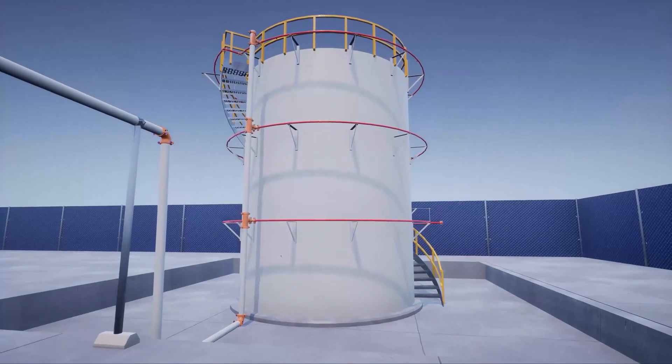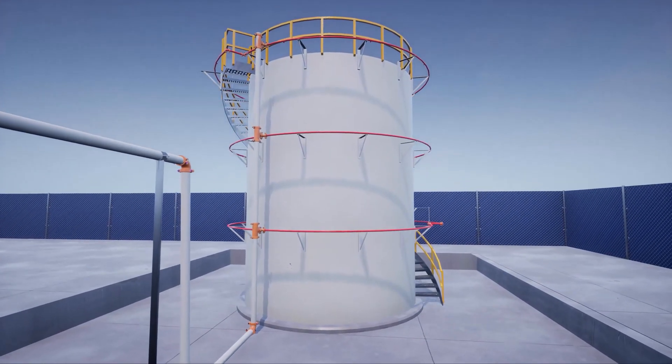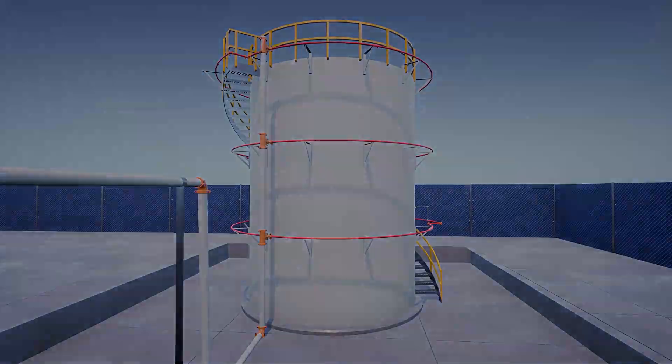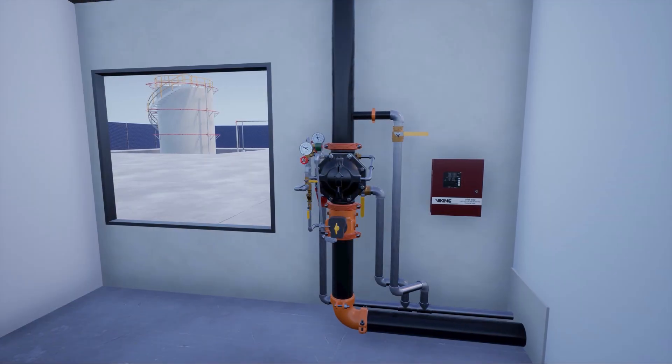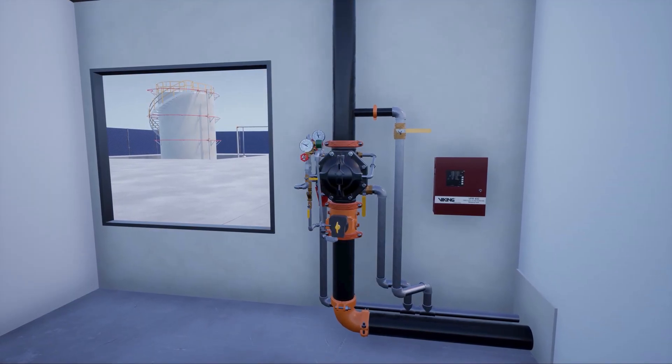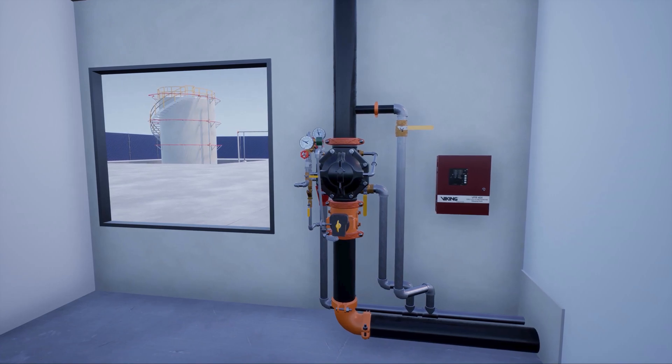In this scenario, we are looking at chemical storage tanks storing flammable contents. The storage tanks are protected with an electric release VXD deluge system.